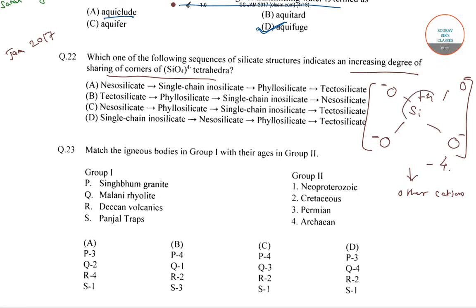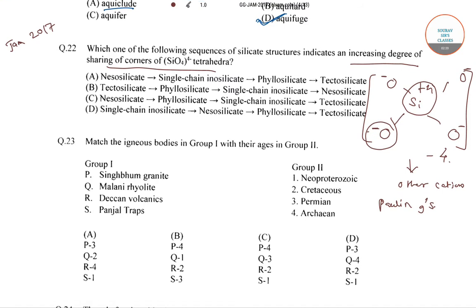Since Si cations are highly charged, Pauling's rule states that they should be separated as far as possible from other Si plus 4 ions. When SiO4 ions are linked together, only the corner oxygen will be shared with other SiO4 groups, and because of this sharing there are several possibilities that give rise to different silicate groups.